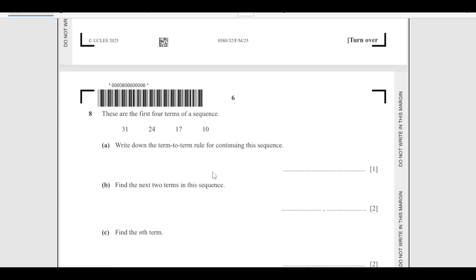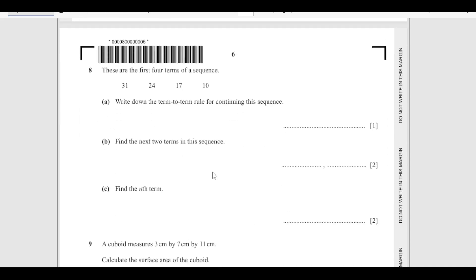Number 8: These are the first four terms of the sequence. Write down the term-to-term rule for continuing the sequence. As you see these numbers are decreasing: minus 7, minus 7, minus 7. So we are subtracting 7, it is minus 7. Find the next two terms in this sequence: 10 minus 7 is 3, and then 3 minus 7 is negative 4. So next terms are 3 and negative 4.